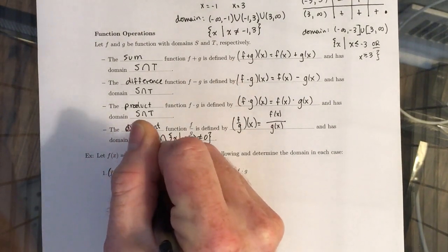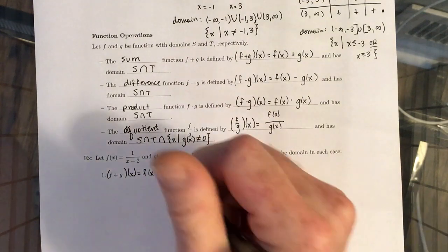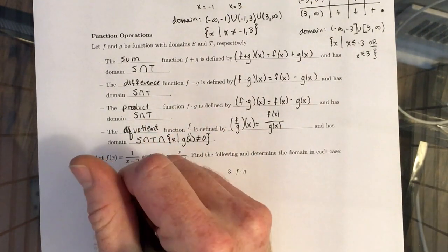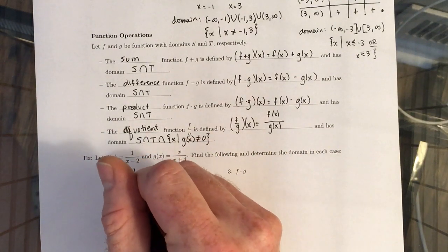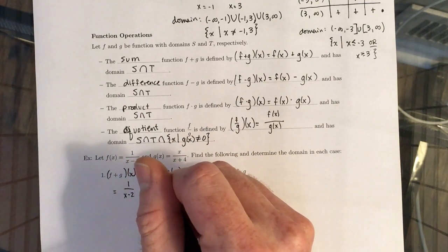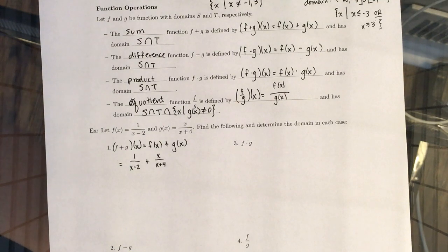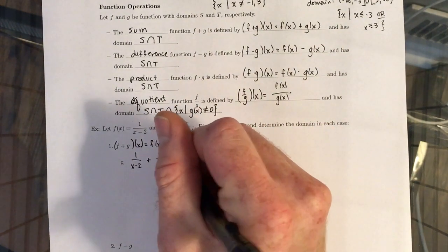f plus g of x - our definition says you find f of x and g of x and just add them together. Substituting 1 over x minus 2 for f and x over x plus 4 for g, we just add those together. We have two fractions that we need to add, which means we need to find a common denominator. The easiest way is to just take the denominator of one, multiply it by the denominator of the other, and that's your common denominator.